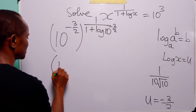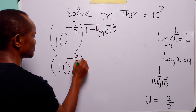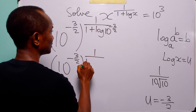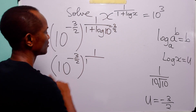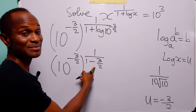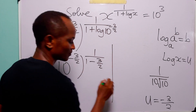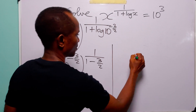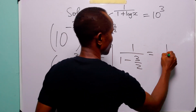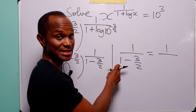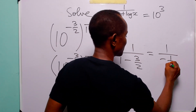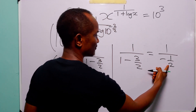So this is going to be equal to 10 to the power (minus 3 over 2) to the power 1 over (1 + (minus 3 over 2)). This is going to be minus 3 over 2. Let us simplify this exponent: 1 over (1 minus 3 over 2). This is equal to 1 over ((2 minus 3) over 2), which is 1 over (minus 1 over 2).